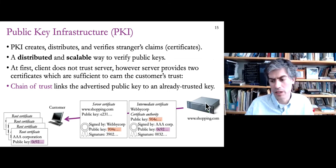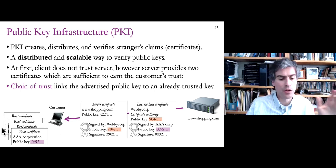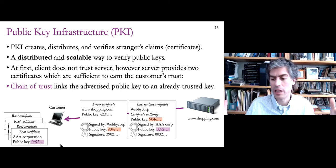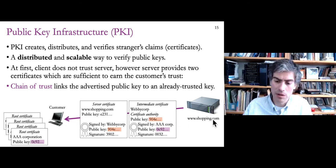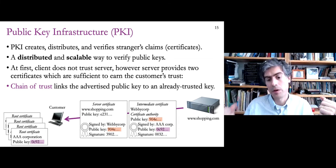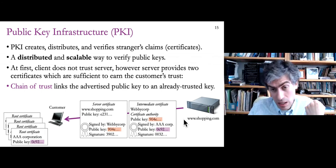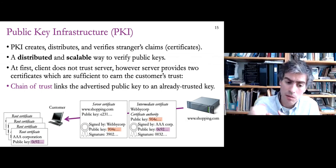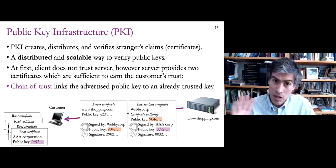Here's what happens when a customer connects to shopping.com. At the beginning of the transaction, the customer has no information about shopping.com — it's never visited the website before. The computer couldn't possibly have had the public key already stored. The way it works is with a chain of trust. The shopping.com website gives two pieces of information — two certificates. It gives its own certificate listing its domain and public key, which has a signature on it signed by an intermediate called Webicorp. Webicorp has provided its public key, and has used its private key to generate the signature, giving it to shopping.com so shopping.com can present this to others. People who see this will know that Webicorp has signed it with its private key.